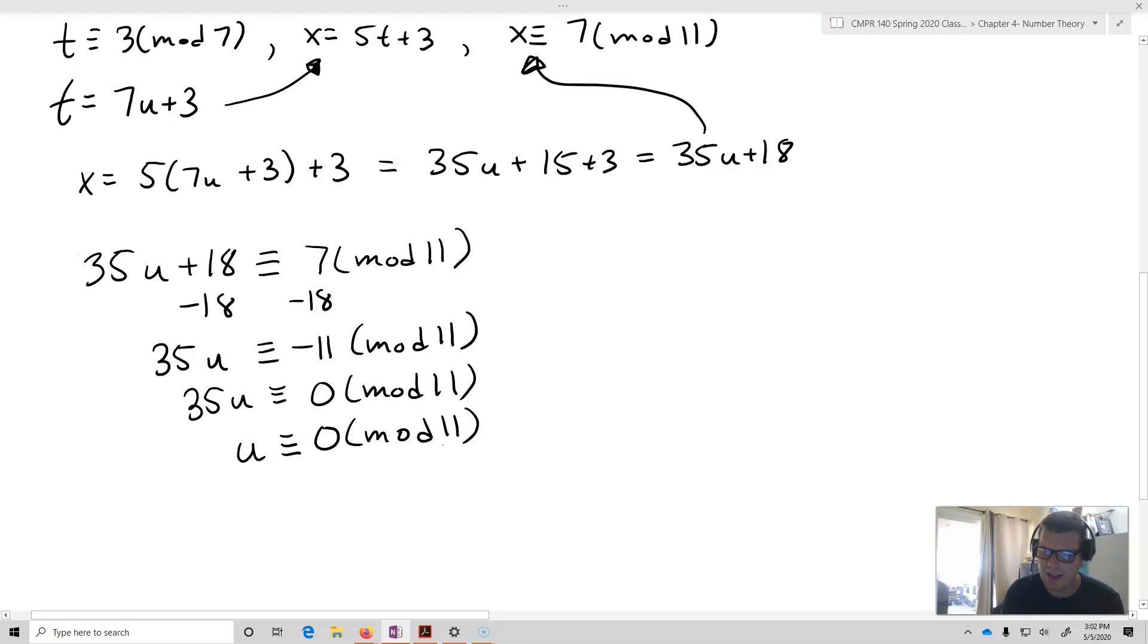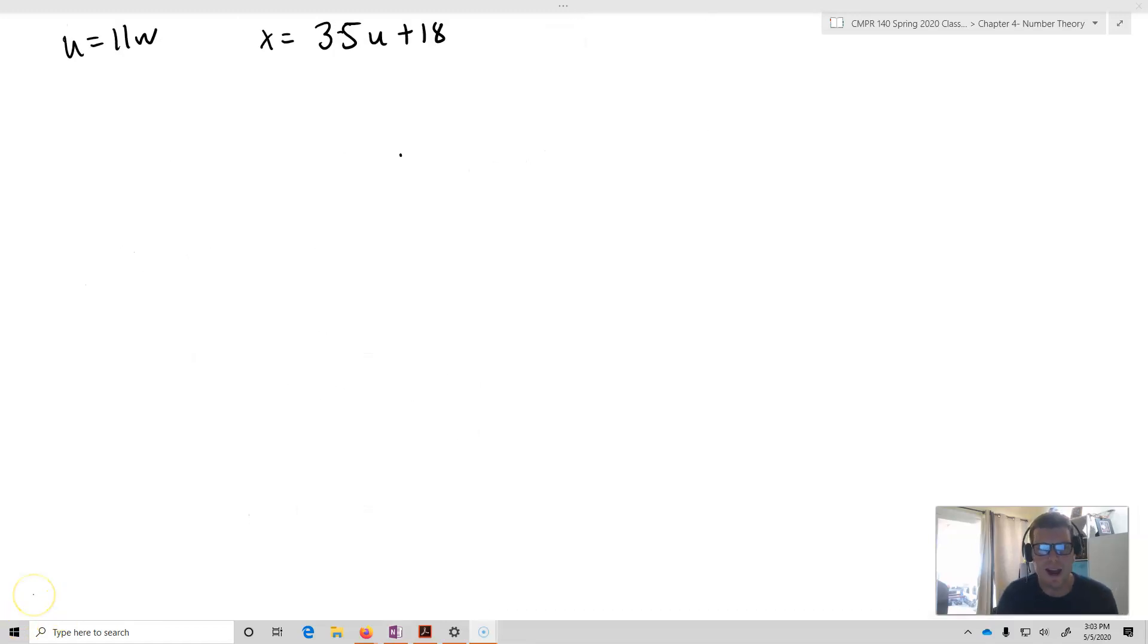What this means, then, is that u equals 11 times some variable w. And now that's the final thing that we're going to need in order to solve this equation. We've got u equals 11w plus 0, but it's just 11w.